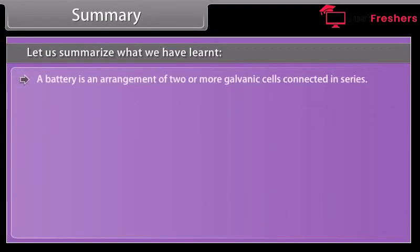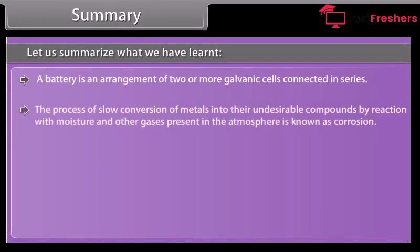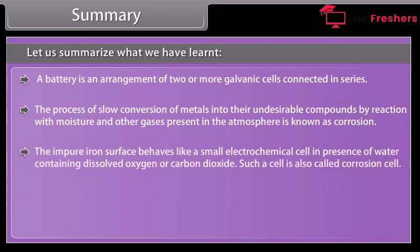A battery is an arrangement of two or more galvanic cells connected in series. The process of slow conversion of metals into their undesirable compounds by reaction with moisture and other gases present in the atmosphere is known as corrosion. The impure iron surface behaves like a small electrochemical cell in presence of water containing dissolved oxygen or carbon dioxide. Such a cell is also called corrosion cell.